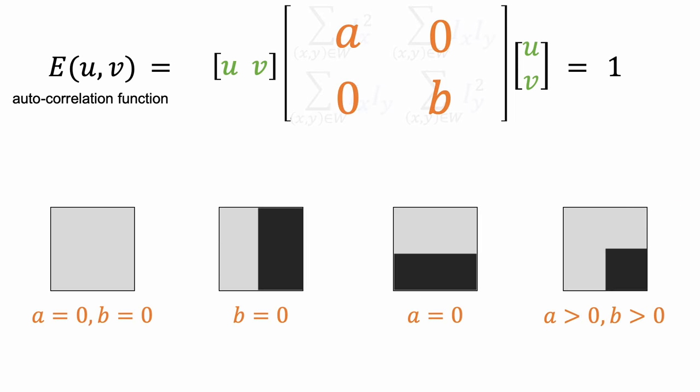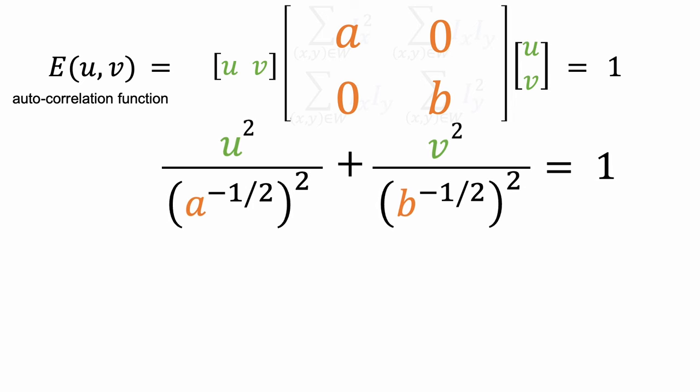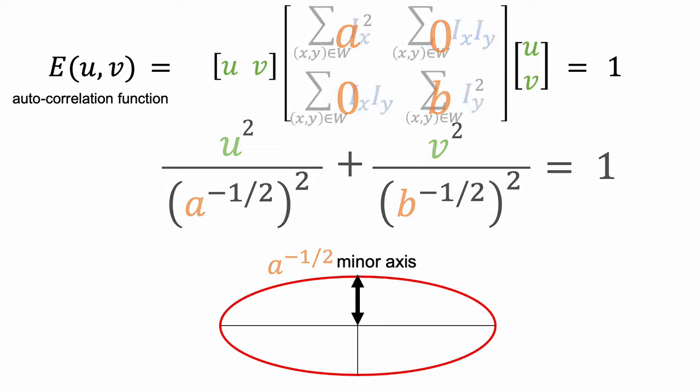We can gain more intuition by looking at a special case where image gradients are either horizontal or vertical. Here is the quadratic equation, assuming the constant is 1. We recognize that this is the equation of an ellipsoid with a major and a minor axis.